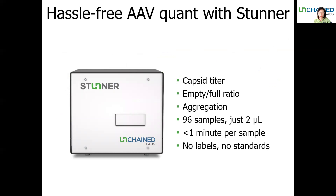Stunner is our ultimate AAV characterization tool that measures up to 96 samples in a plate and gives you capsid titer, full/empty ratio, and aggregation information, all with just 2 µL of sample volume. All the data is obtained without the need for sample preparation such as labeling or running side-by-side standards.